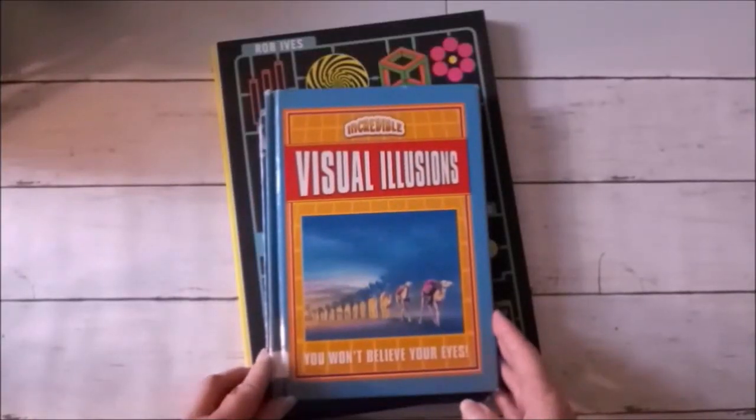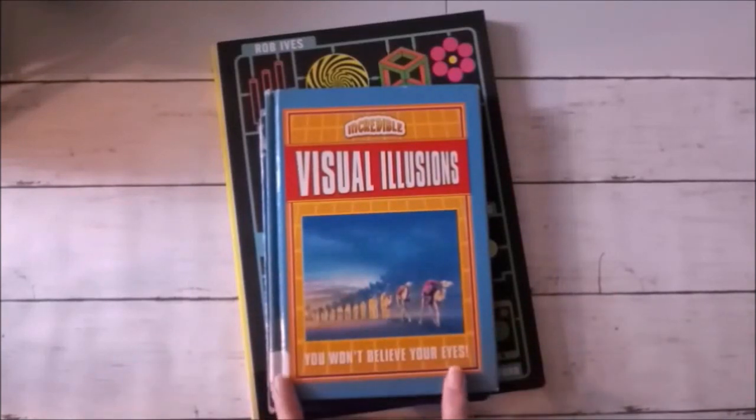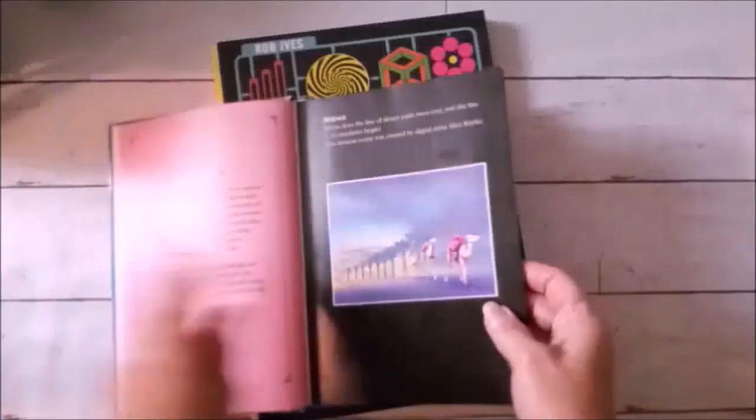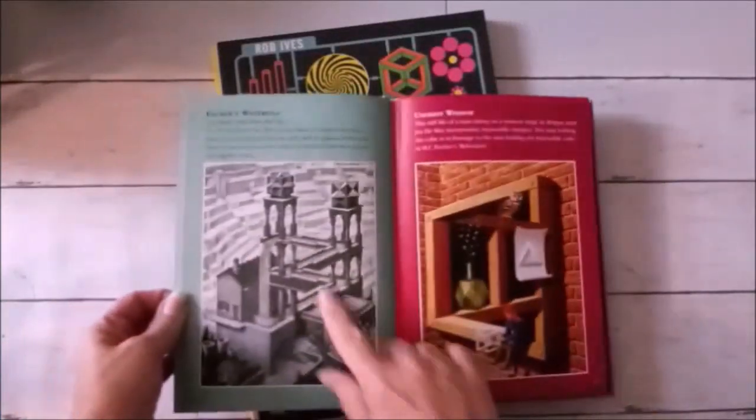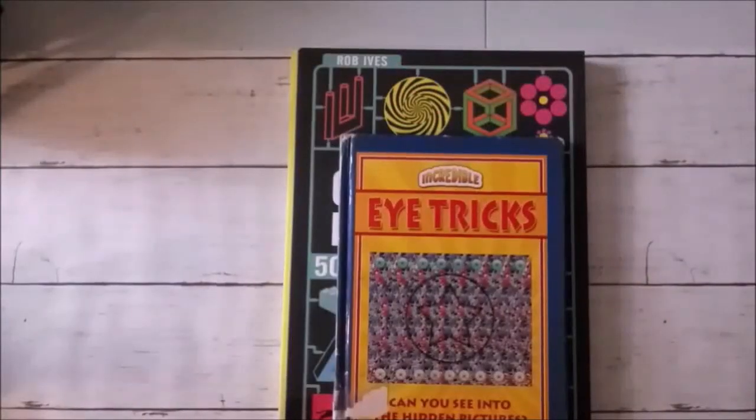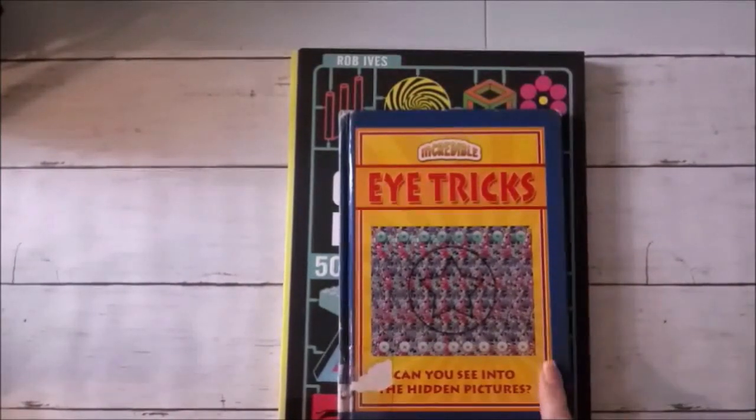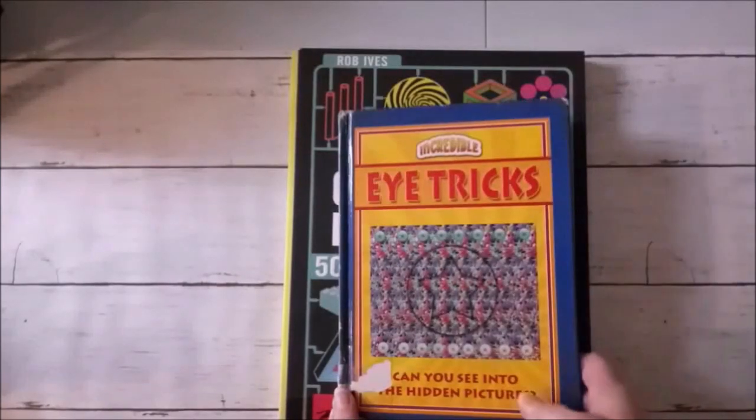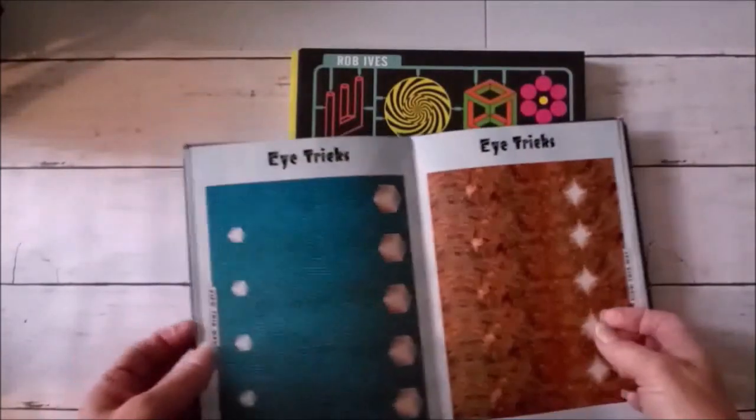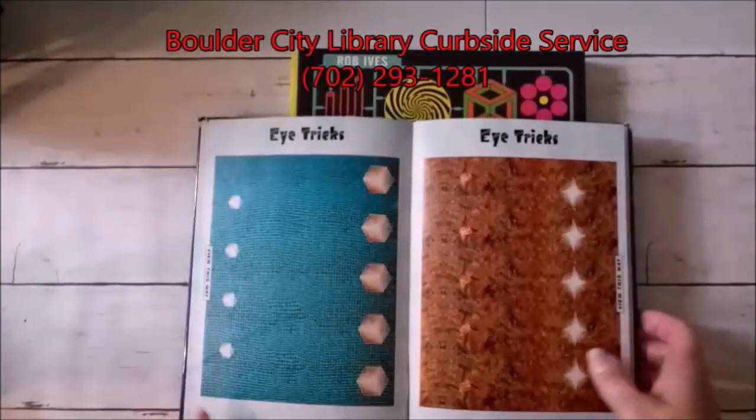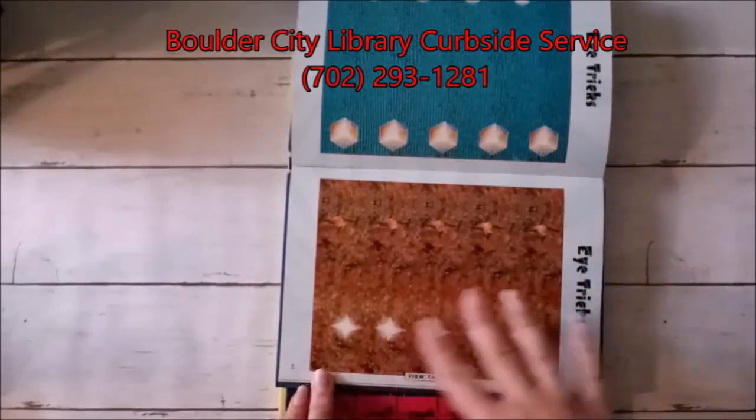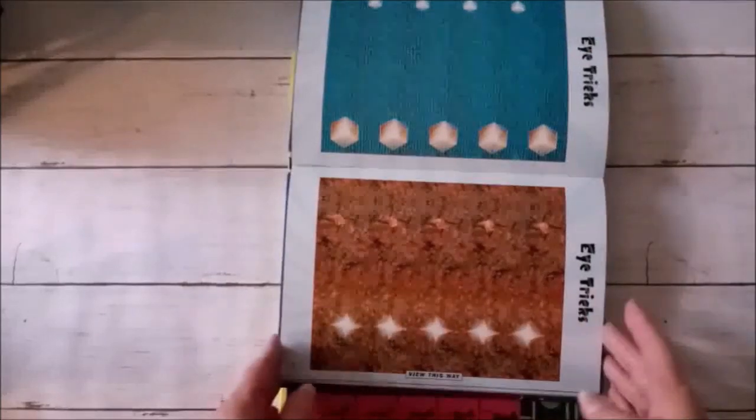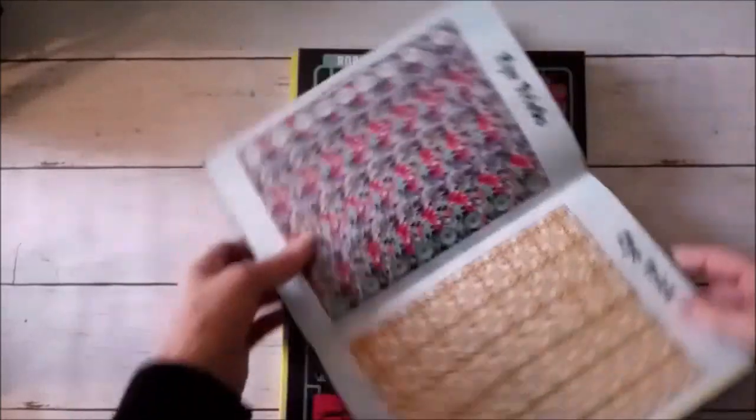This is one we have called Visual Illusions. You won't believe your eyes. And it's full of these kind of little tricks that your eyes can play on you. Again there's Escher. And we have this one. It's called Incredible Eye Tricks. Can you see into the hidden pictures? Years and years ago they had things called stereograms. And you had to stare into the picture and kind of relax your gaze in order to see the hidden picture. It's kind of tricky but it can be done. But those are kind of fun.